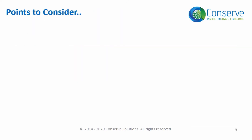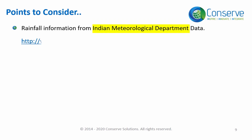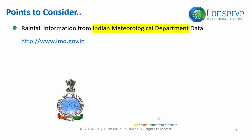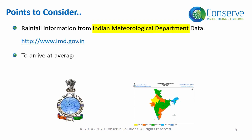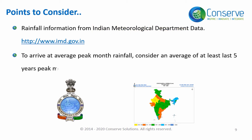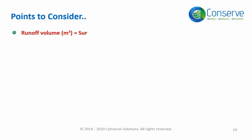Some points to consider for calculation: rainfall information should be referred from the Indian Meteorological Department. To arrive at average peak month rainfall, consider at least five years of rainfall data. Runoff volume can be calculated based on the formula provided.